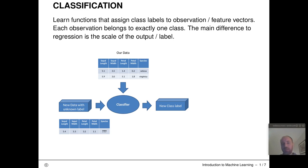As in regression, in classification we still want to learn assignment functions based on training data that optimally assign an outcome for each observation based on feature values and feature vectors. The main difference to regression is that we are not going to assign a numerical score to each observation, but we are going to categorize each observation into exactly one class.